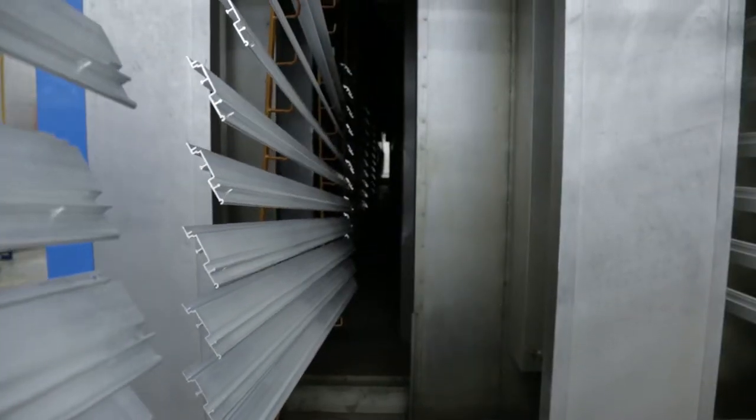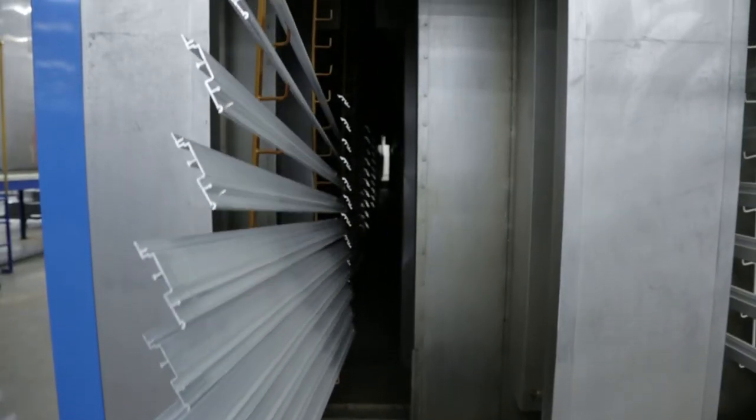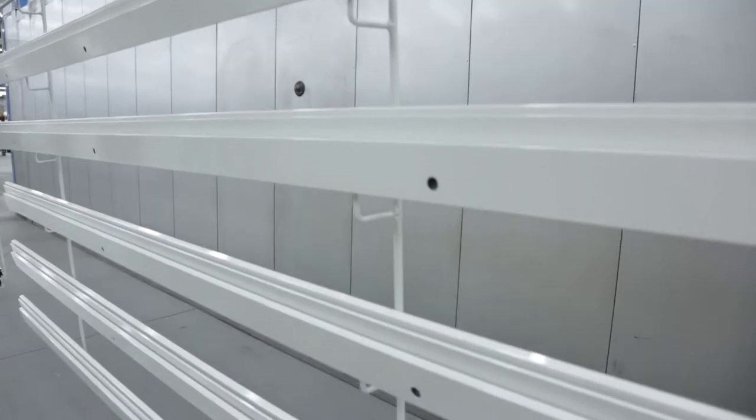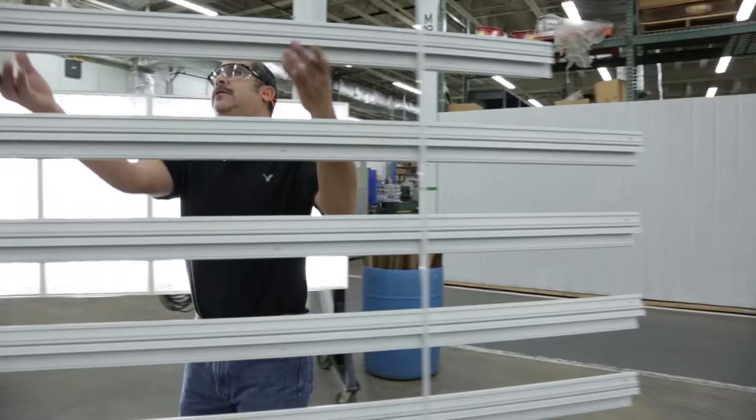After the parts are washed and pre-treated, they are dried and ready to be painted. Upon completion of the coating application, the parts are cured in an oven and allowed to cool before unracking and inspection.